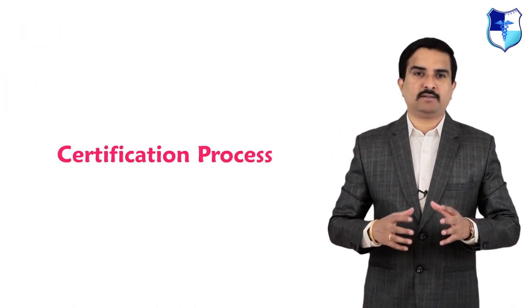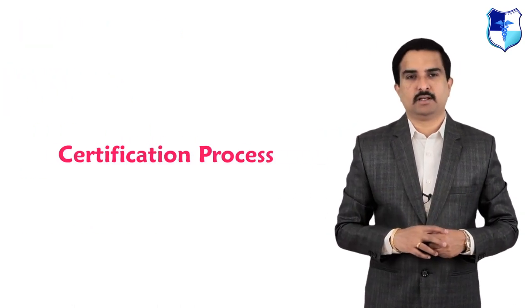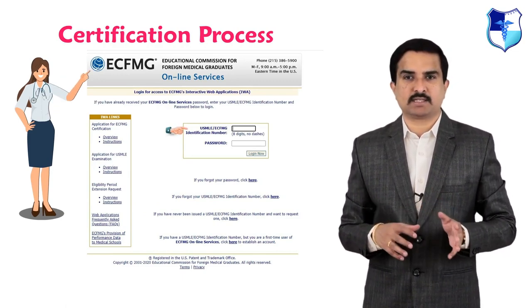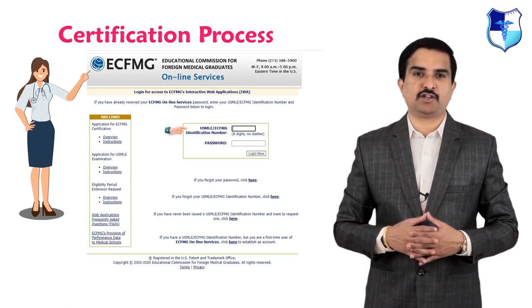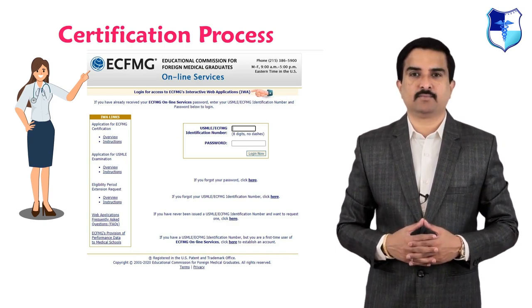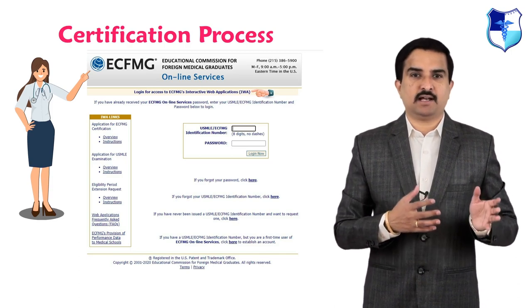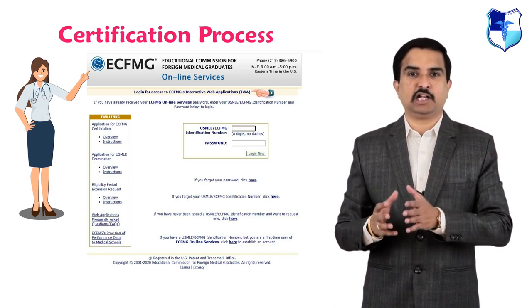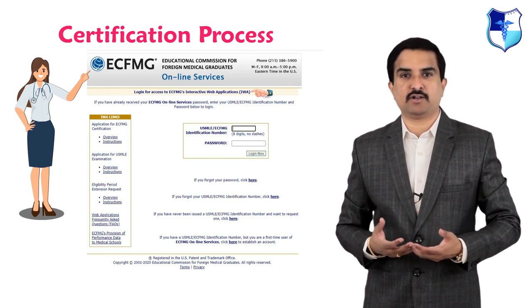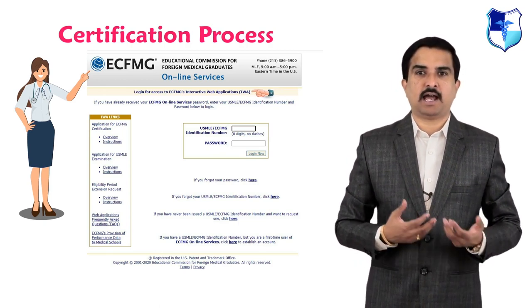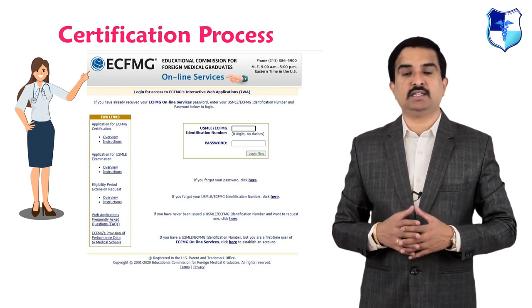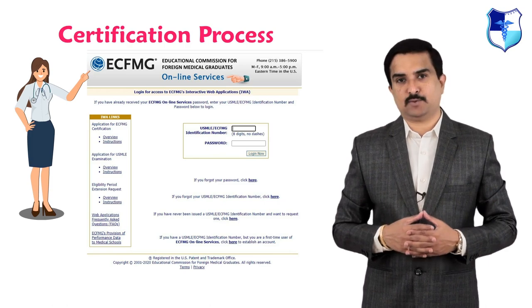Now, what is the certification process? The certification process begins with a request for a USMLE or ECFMG identification number through ECFMG's interactive web application. Once ECFMG assigns a number, it must be included in all communications thereafter — applications, medical education credentials, request forms, and payments to ECFMG. It is also required for use in ECFMG's online services.